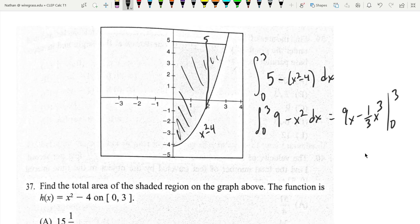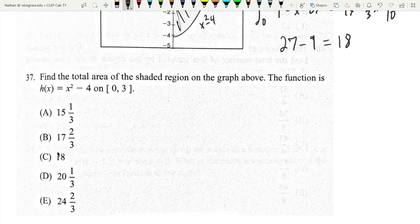So 3 is going to be 9 times 3 is 27. 3 cubed is 27, over 3 is 9. That gives us 18, so the answer is C.